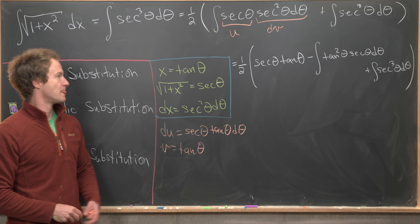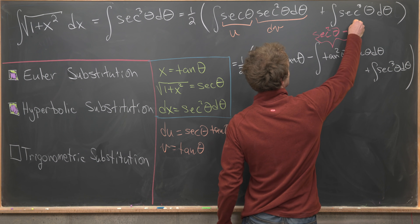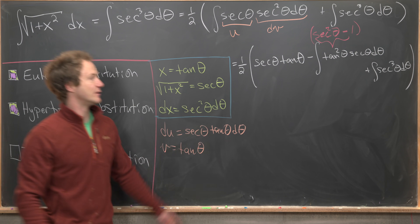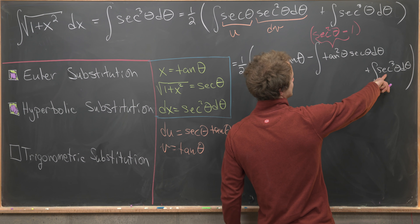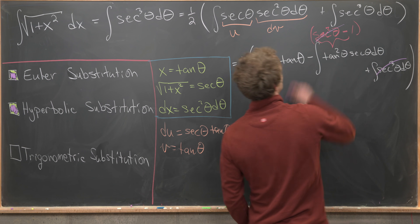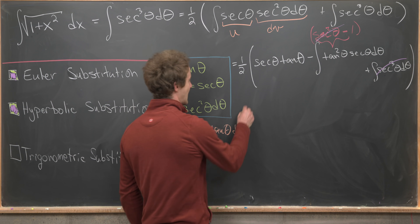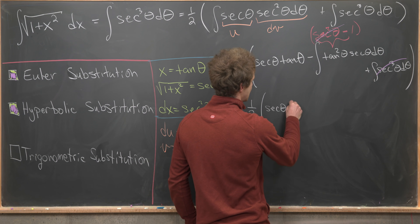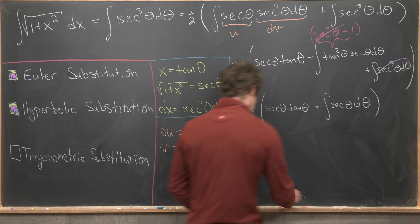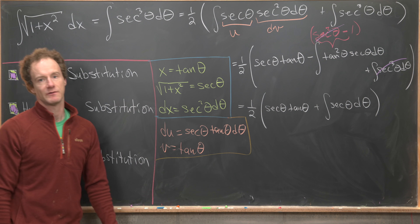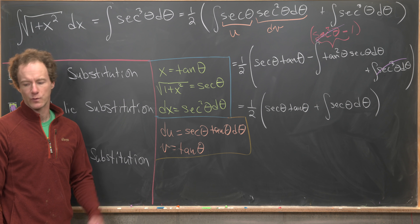Now the magic happens: replacing tan²(θ) with sec²(θ) − 1, the term −sec²(θ) · sec(θ) gives −sec³(θ), which cancels the remaining sec³(θ) integral. We're left with the minus of negative sec(θ), giving plus sec(θ). So the whole thing reduces to one-half times [sec(θ)tan(θ) plus the integral of sec(θ) dθ].